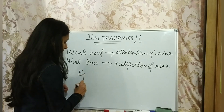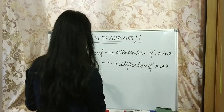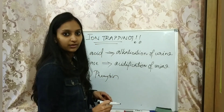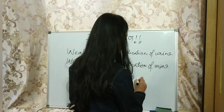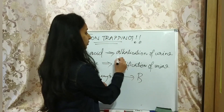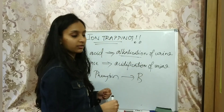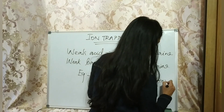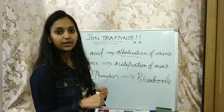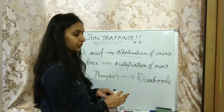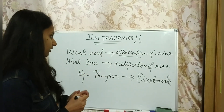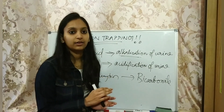For example, if a patient comes in with phenytoin poisoning — phenytoin is a weak acid — we are going to alkalize the urine. We give bicarbonate, which causes alkalization of urine, and as a result the weak acid is eliminated from the body. This is ion trapping and it is very efficient in treating drug poisoning.